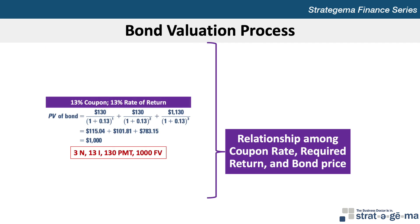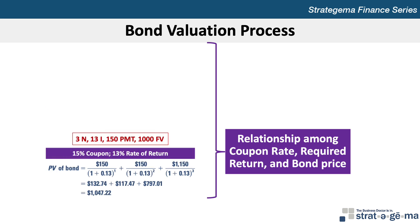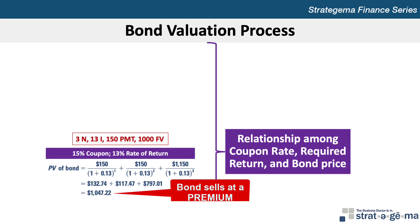The very low price of this bond is necessary to generate a 13% annualized return to investors. Now assume the bond has a 13% coupon rate resulting in an annual coupon of $130. The present value would be $1,000 — exactly equal to its par value, as the coupon payments provide the entire compensation required by investors. Finally, assume the bond pays a 15% coupon or $150 per year. The present value would now be $1,047.22, which is greater than the $1,000 par value and therefore sells at a premium.